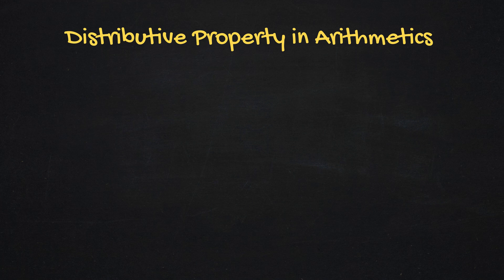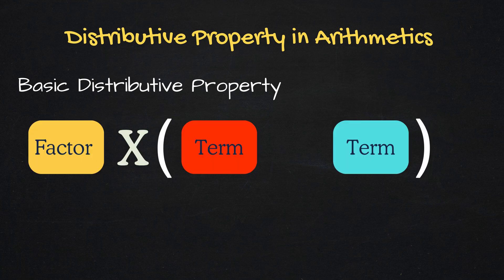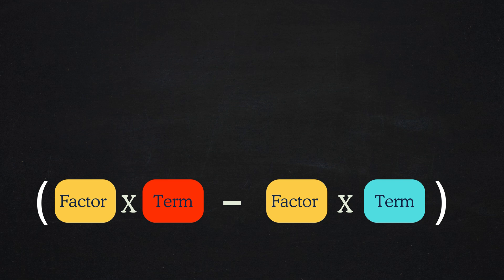If you already know the distributive property in arithmetic, then you're familiar with the basic idea of how it works. The main idea behind the distributive property is that it allows you to multiply a factor by each term inside a group of terms that are either being added or subtracted. In other words, you distribute the factor across the individual terms of the group, multiplying it with each one individually.